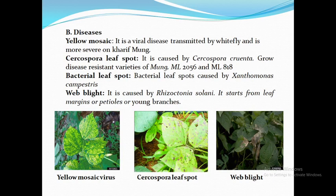Cercospora Leaf Spot: Cercospora leaf spot disease is an important and devastating disease of green gram. Symptoms appear on leaves as water-soaked spots with a characteristic border. The petioles, stems, and pods are also affected by the pathogen. Bacterial Leaf Blight: Green gram crop suffers from bacterial leaf blight disease caused by Xanthomonas species during the kharif season. Symptoms are observed on all above-ground parts of plants such as stems, leaves, and pods. Small deformed seeds develop on dark brown spots.